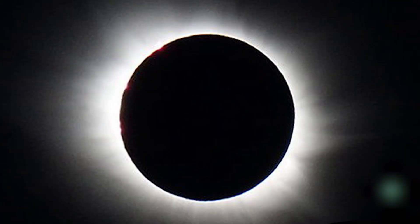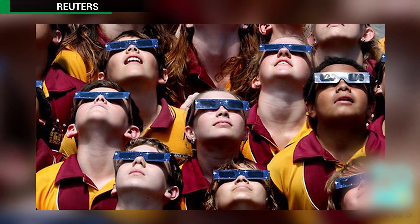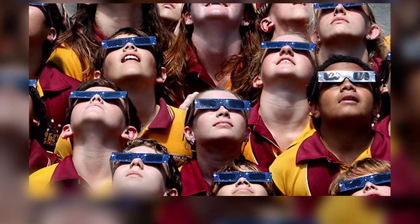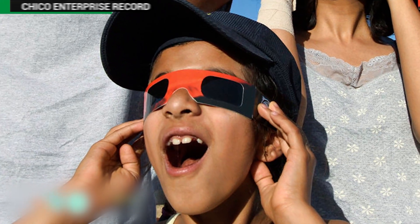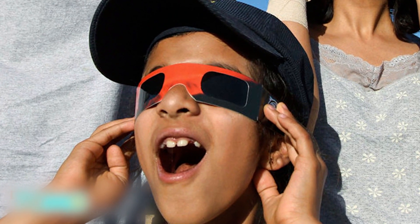The Great American Eclipse is less than a year away. America has started counting down to a total solar eclipse that will be visible from coast to coast on August 21st next year, and NASA says it will only be visible in the USA.